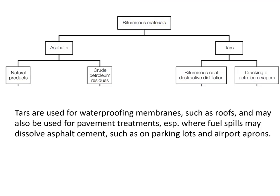Bituminous materials are classified as asphalt and tars. Asphalt is mainly used in pavement construction, and asphalt binders are also used as sealing or waterproofing agents. Tars are produced by the destructive distillation of bituminous coal or by cracking petroleum vapors. In the United States, tar is used primarily for waterproofing membranes such as roofs. It's important to know that asphalt and tars are two different materials.